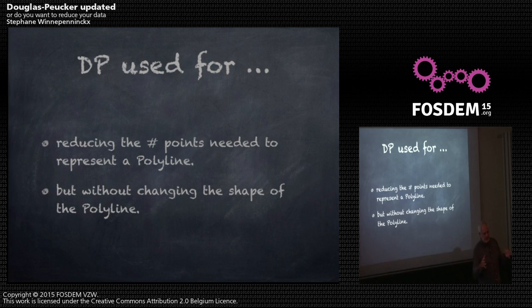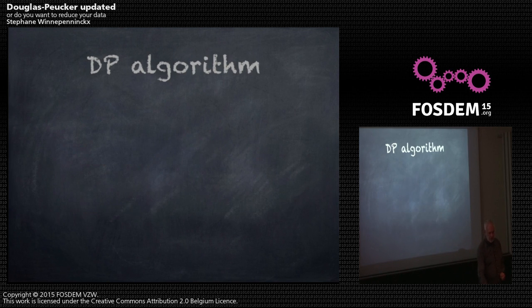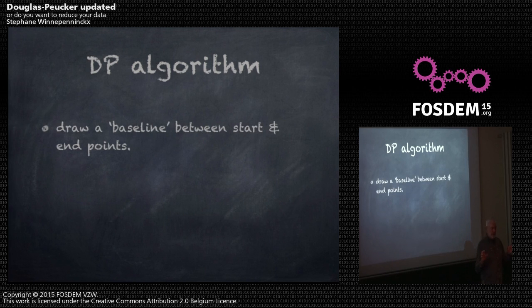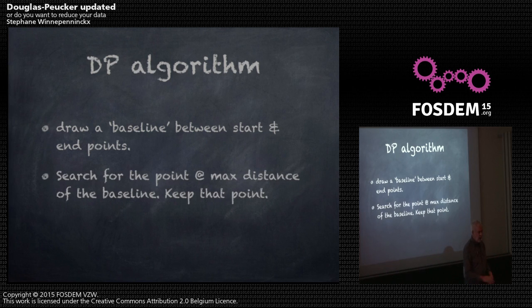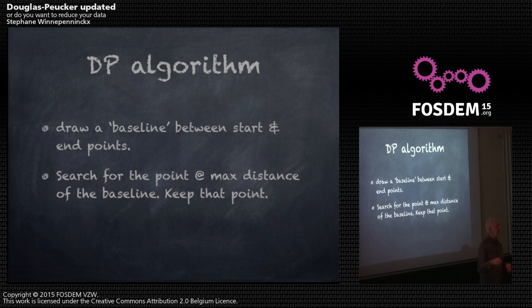You don't want to change the shape of the polyline. The Douglas-Peucker algorithm says you have to draw a baseline between the start and the end point. Then you search for the point that is the most distant from the baseline on the polyline, you keep that point, and then you separate your polyline into a left part and right part and you do it again and again.